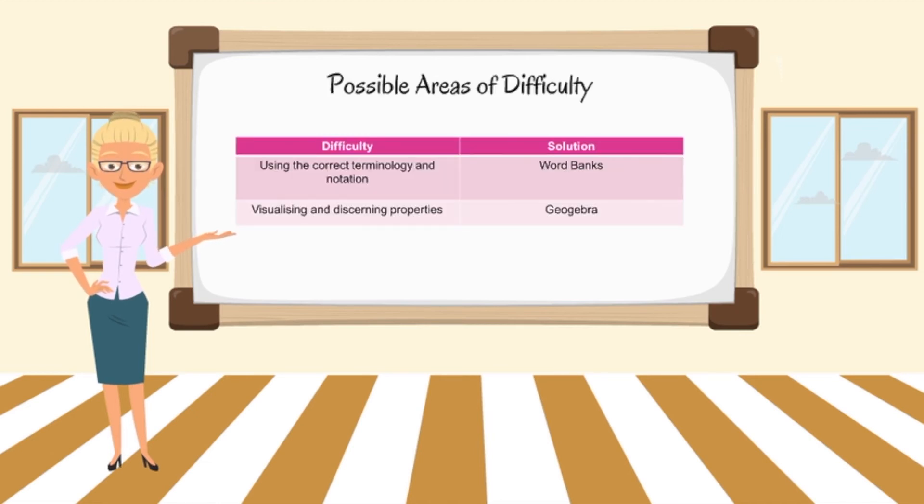Anticipated areas of difficulty when teaching circle geometry include using the correct terminology and notation and visualizing relationships and properties. This is overcome with the use of a word bank in each lesson and GeoGebra is used in the introductory lesson to build students' visualization skills for use throughout the topic.